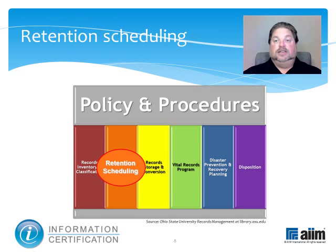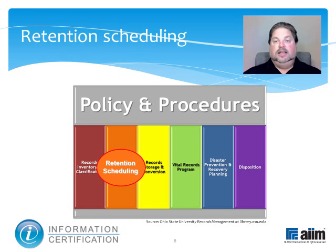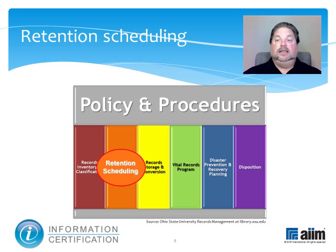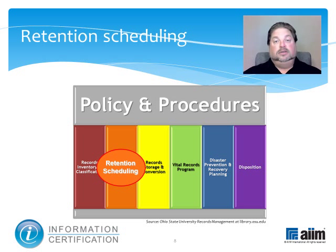Next, a records retention schedule is developed. Besides noting at minimum how long records must be retained and what their ultimate disposition is to be, a retention schedule may indicate a legal or regulatory citation that mandates a specific retention period, how long records should be maintained in an active on-site file, how long they may need to be retained in inactive off-site storage, and whether they're vital records. Each record's life cycle is determined by analyzing three primary needs — legal, fiscal, and administrative — and also three secondary needs: evidential, historical, and informational.